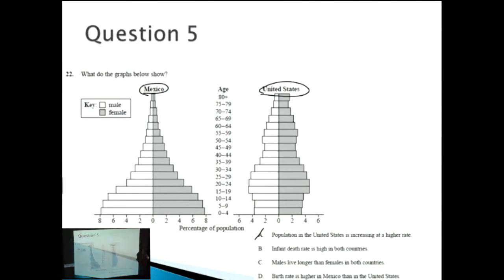How about B? Infant death rate is high in both countries. But we're talking about percentage of population here. So we don't really know anything about the death rate. So once again, we can ignore B. How about C? Males live longer than females in both countries. So if we compare males versus females, males being the white color versus female, which are in the gray color. You can see that, say in the United States, there are more females alive at 80 plus compared to males. So this doesn't seem to make sense either. So just by ruling out the first three answers, we can see that D is most likely to be the right answer.